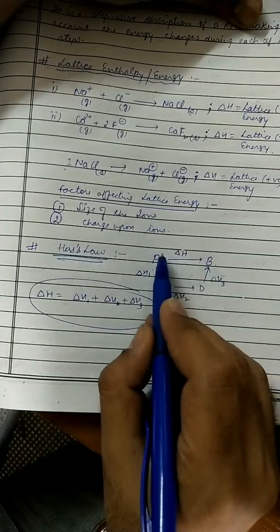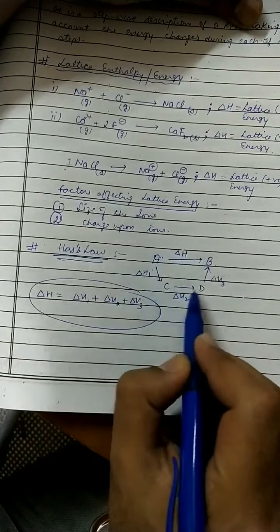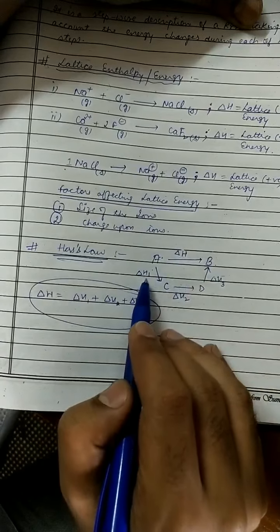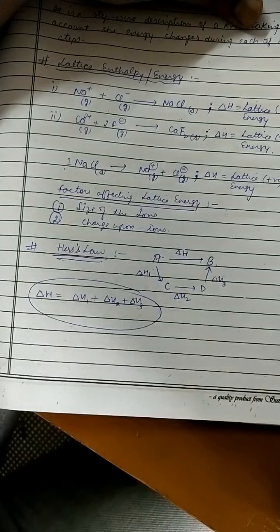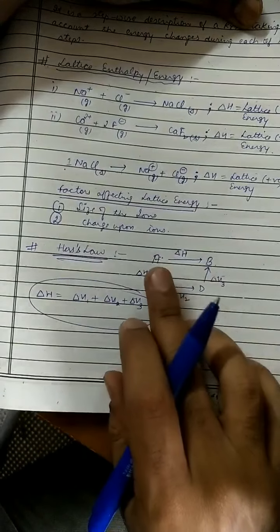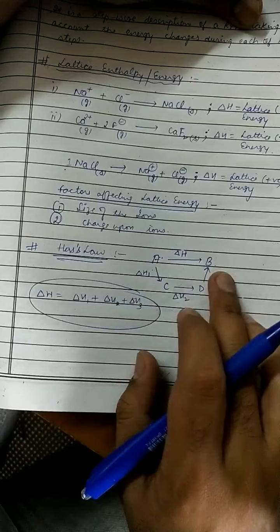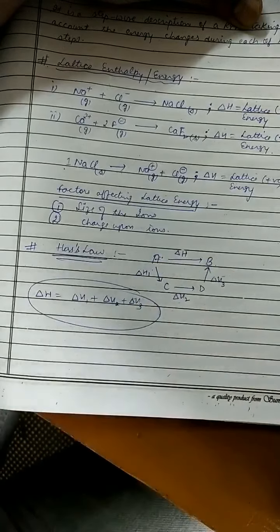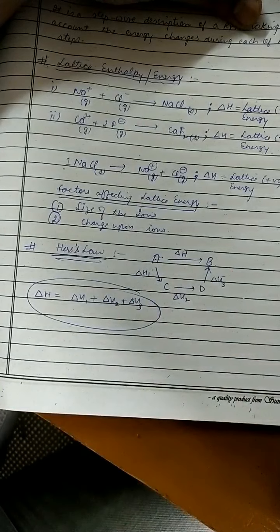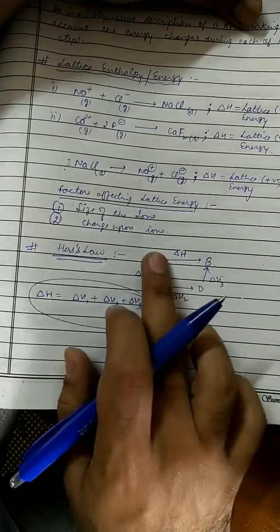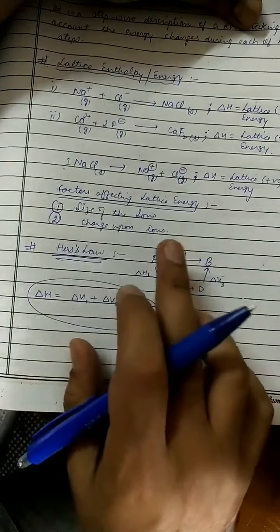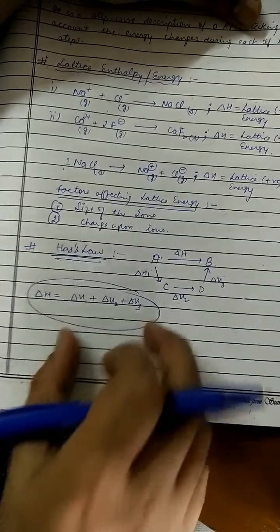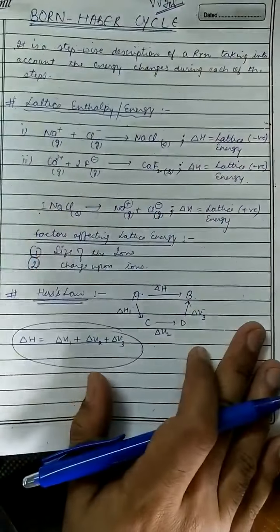Enthalpy change वो initial और final state पर depend करता है, path followed पर depend नहीं करता। चाहे A से B जाना है single step में जाओ या तीन steps में — energy change will be same। delta H = delta H1 + delta H2 + delta H3, क्योंकि enthalpy change is a state function। इसको भी हम Born-Haber cycle में use करेंगे।